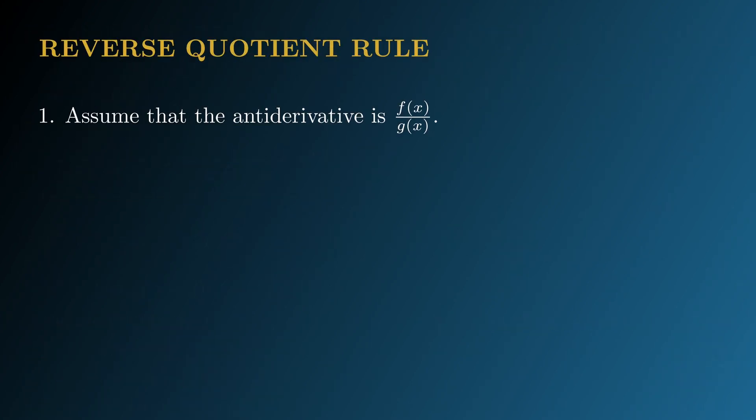Just to recap what we did here. First, we assume that the antiderivative is in the form f over g, because the integrand is a quotient and its denominator is a square. Second, we assume that g is x squared plus 1, because the denominator of the integrand is the square of x squared plus 1.